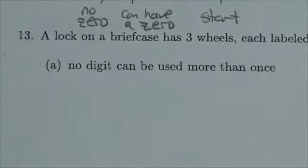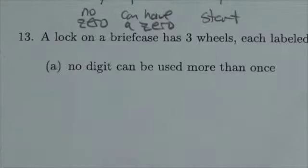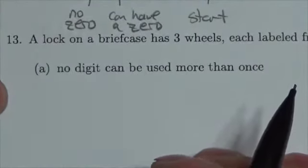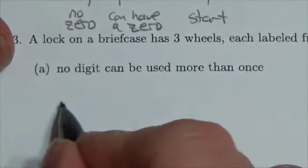Okay everybody, here's a classic fundamental counting principle problem. A lock on a briefcase has three wheels, each labeled 0 to 9. State the number of codes that can be formed if no digit can be used more than once. So you're only allowed to use each digit once here.